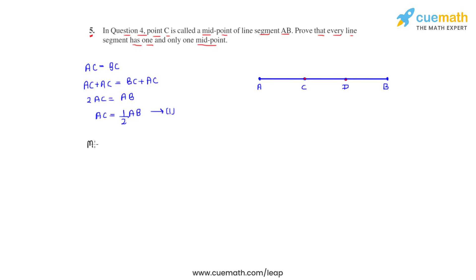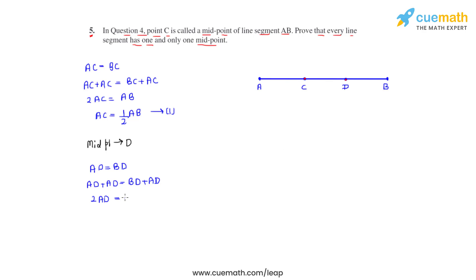Now the second assumption is that there is a second midpoint D. In this case we can write that AD equals BD. Adding AD on both sides, we get AD plus AD equals BD plus AD. On addition we get 2 times AD equals BD plus AD. From the figure, BD plus AD equals AB. So we write 2 times AD equals AB, which implies AD equals half of AB.